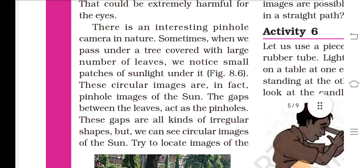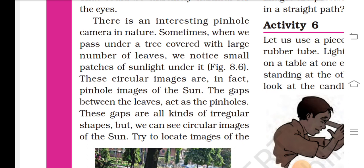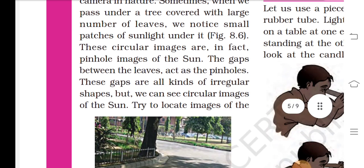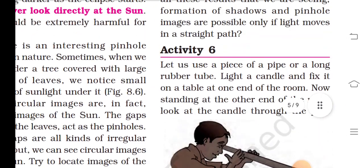Never ever look directly at the sun. That could be extremely harmful for the eyes. There is an interesting pinhole camera in nature. Sometimes when we pass under a tree covered with a large number of leaves, we notice small patches of sunlight under it as shown in Figure 8.6. These circular images are in fact pinhole images of the sun. The gaps between the leaves act as pinholes. These gaps are all kinds of irregular shapes, but we can see circular images of the sun.